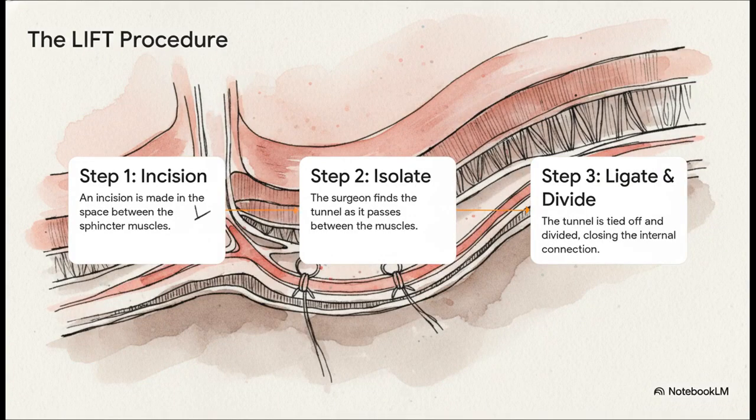For complex fistulas, things get more clever. There are techniques like the LIFT procedure, and the idea behind this is really brilliant. Instead of cutting through the muscle, the surgeon makes a small incision away from the fistula and finds the tunnel in the space between the two sphincter muscles. From there, they can tie it off and divide it, which closes off the internal opening without ever having to cut those critical gatekeeper muscles.